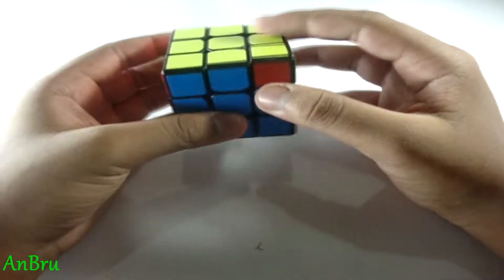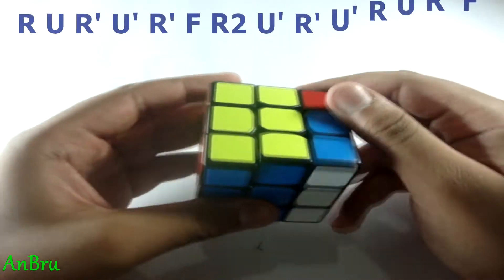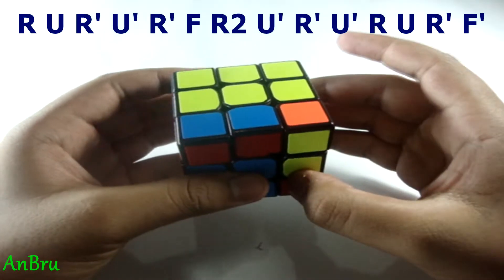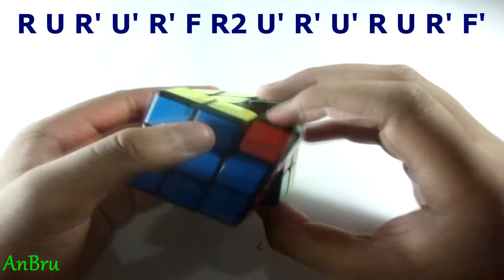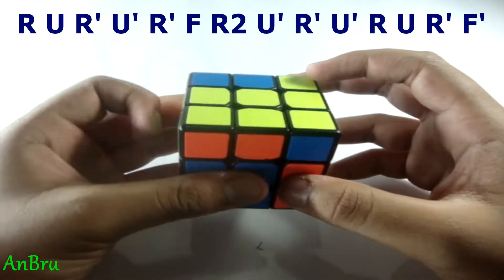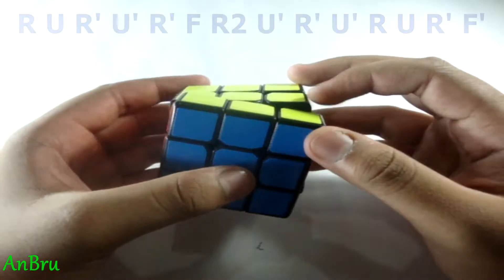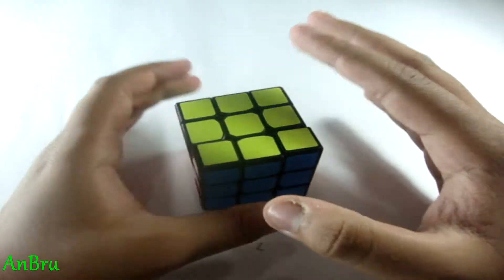So like this you have to hold it, and the algorithm goes like this: R U R' U' R' F R2 U' R' U' R U R' F'. So now I will tell you how I finger trick it.